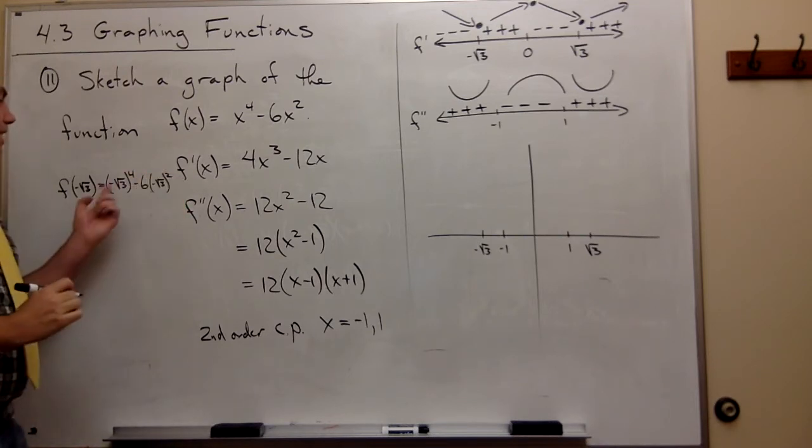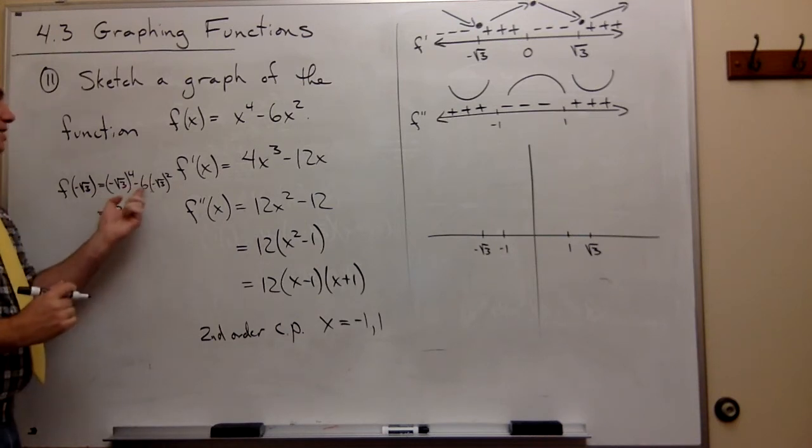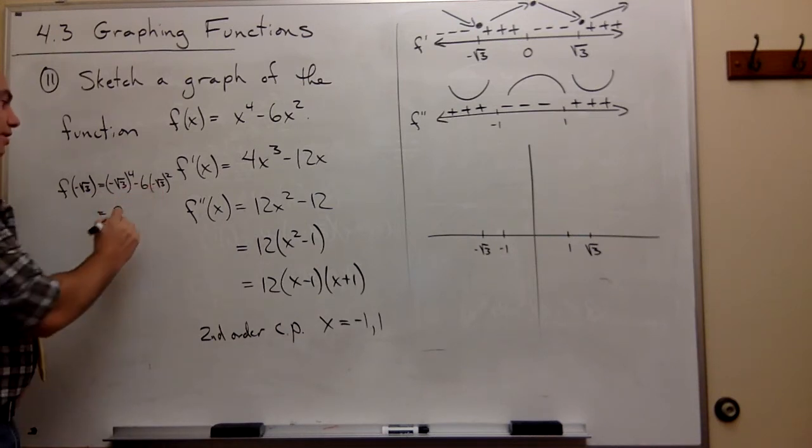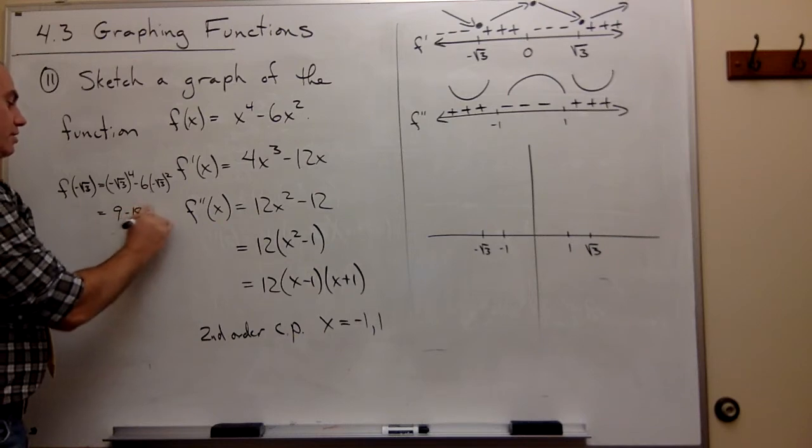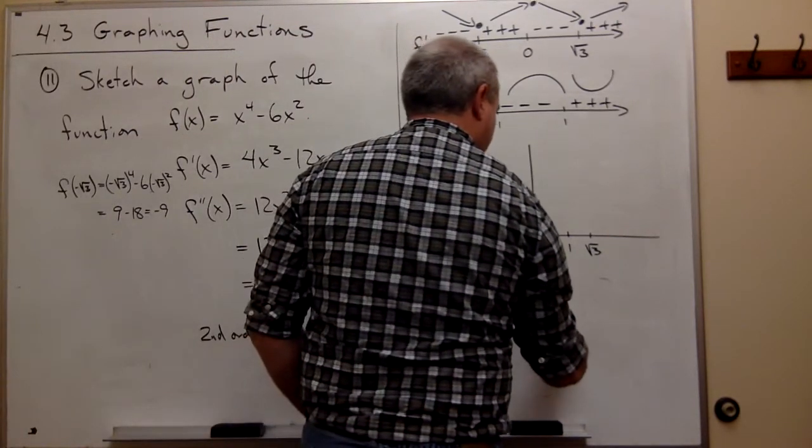So it would be negative root 3 to the fourth minus 6 times negative root 3 squared. Minus root 3 to the fourth is 3 squared, which is 9. And this would be minus 6 times 3. So this is minus 18. So this is negative 9. So let's say that down here is minus 9.